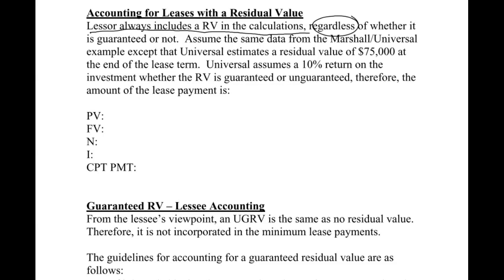We'll assume the same data from the example we've been using throughout — it might be helpful to go back and look at the second and third videos where we introduced all this information. Except that now we're going to have a residual value of $75,000 at the end of the lease term. Notice it does not say whether it's guaranteed or not, because we're just talking about the lessor. They still want to earn a 10% return, so we are going to calculate the lease payment.